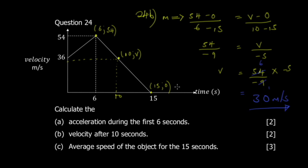This is a popular exam question — the concept comes up regularly. The key steps: define the unknown point as (10, v), state that the gradient is constant, find the gradient using two known points, set it equal to the gradient using the unknown point, and solve for v = 30 m/s.